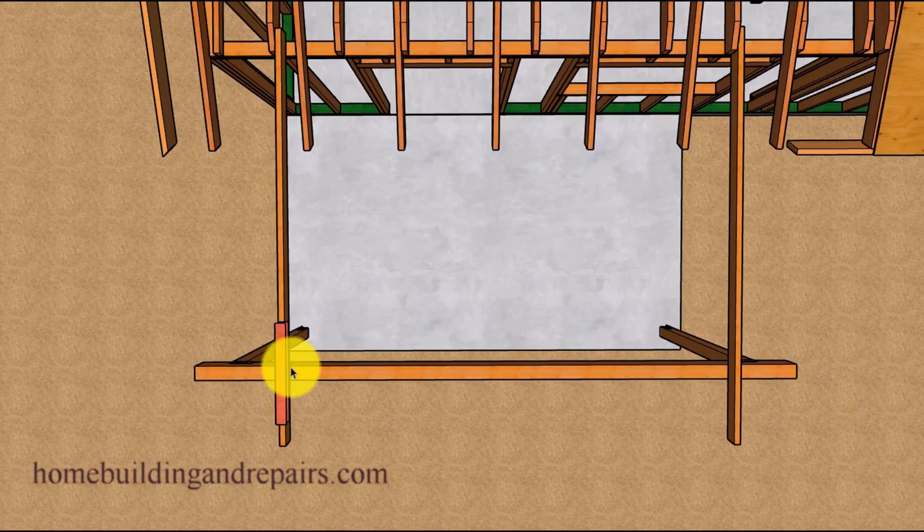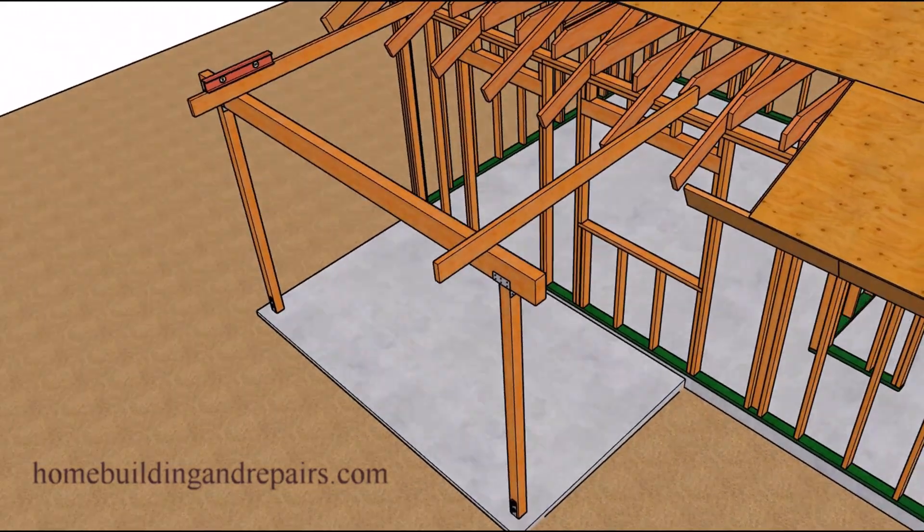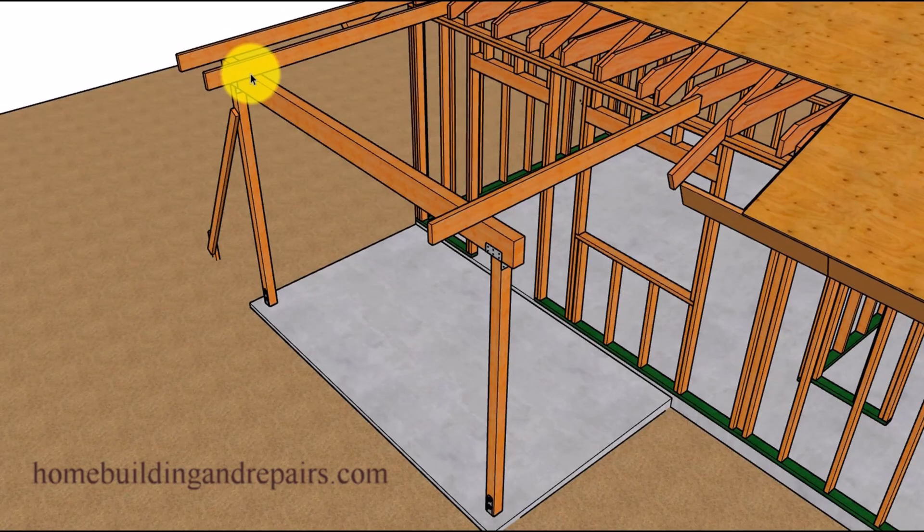Another thing I do when building patios like these to speed up the process will be to nail one of the roof rafters into place at each end and then level or vertically plumb up the posts so that they are plumb in this direction or vertically straight.